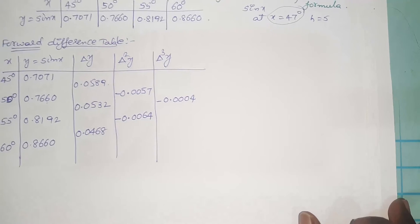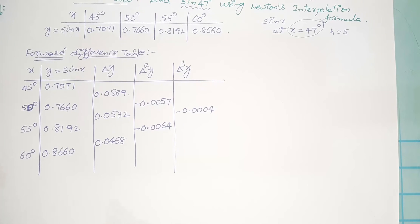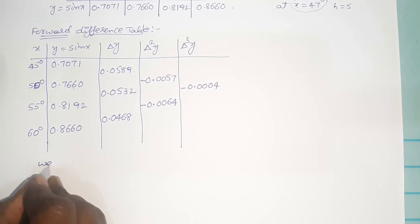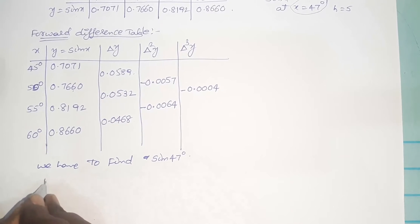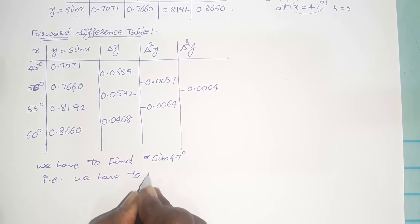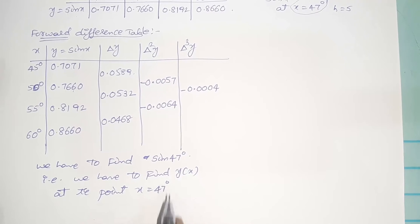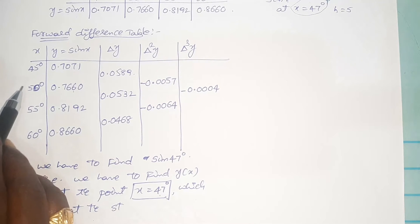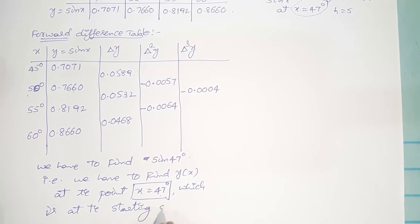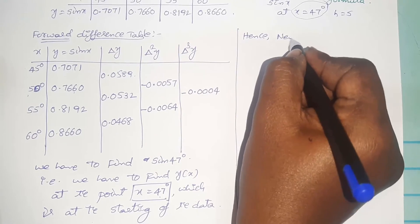We have to find sin 47°, that is y(x) at x = 47°. This point lies at the starting of the data — 47° is between 45° and 50°, which is the starting interval. Hence we apply Newton's forward interpolation formula. Note: if we had to find sin 57°, which is near the end of the data, we would apply Newton's backward interpolation formula instead.